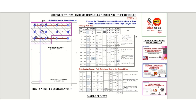We have finally reached Step 11 to conclude our hydraulic calculation procedure. In this final step, we are going to conclude the project requirement for flow and pressure. We will now discuss the primary path data, since we already discussed and calculated the attachment data in our previous steps.